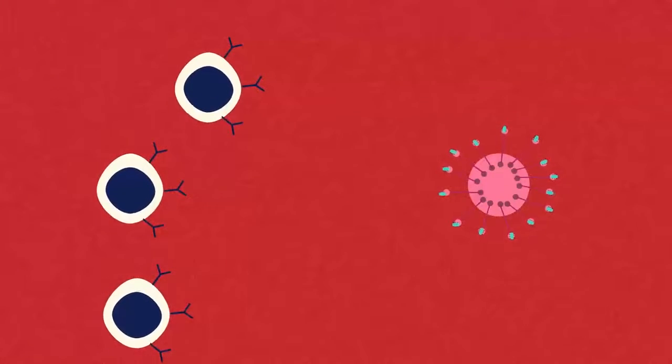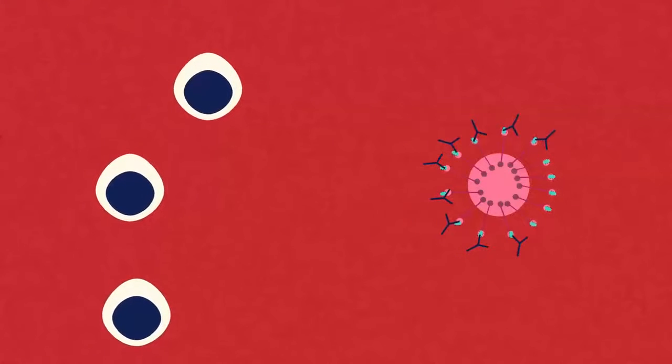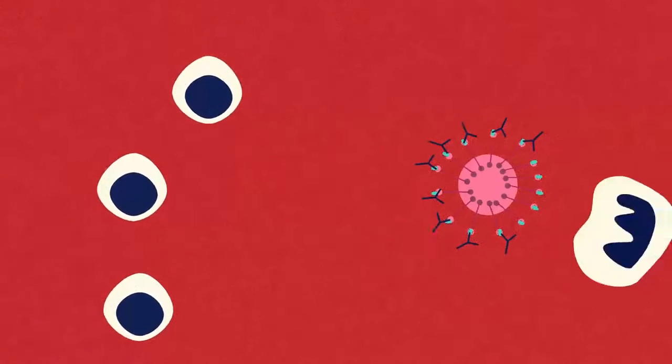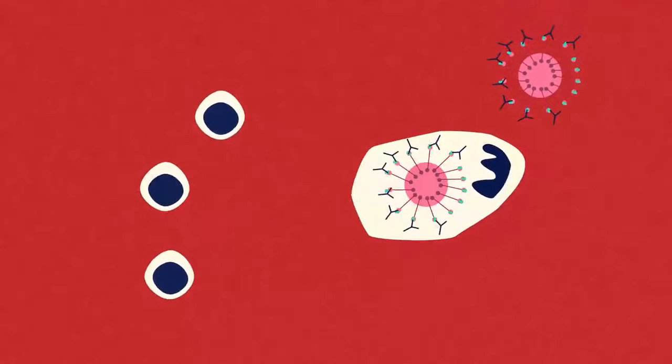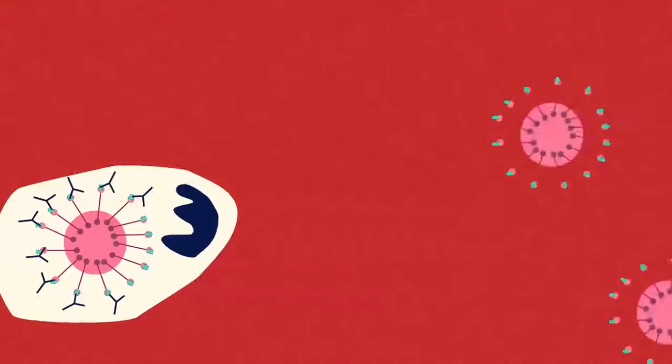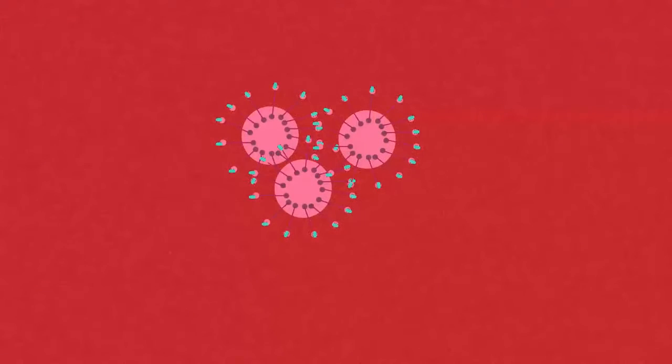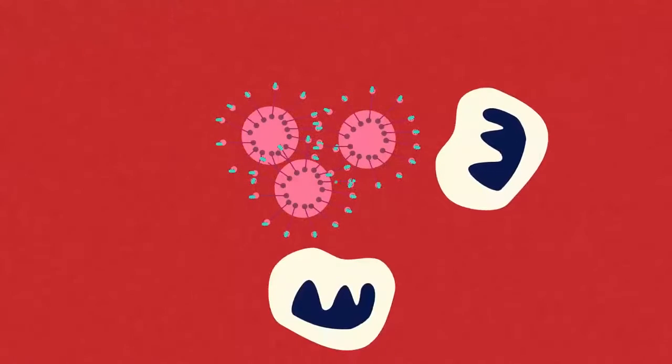The antibodies stick to the surface of the pathogen and kill it either by making it easier for the phagocytes to ingest them or making the pathogen burst or by making the pathogens clump together which turns them into a sticky mess and makes it easier for phagocytes to find them.